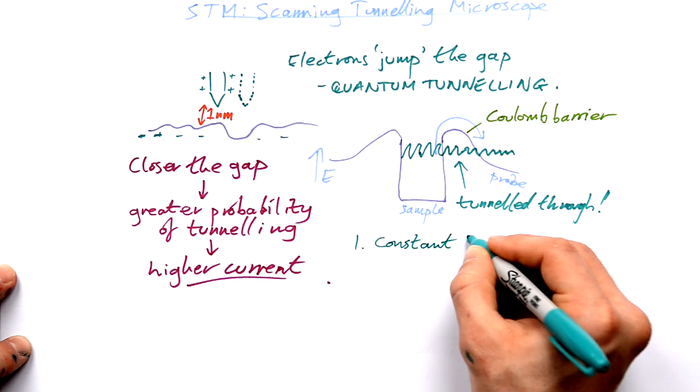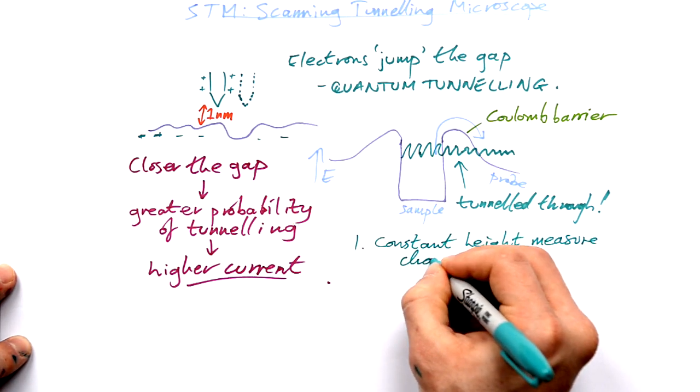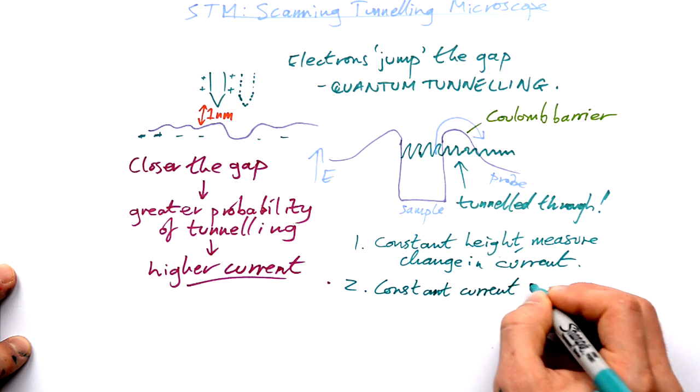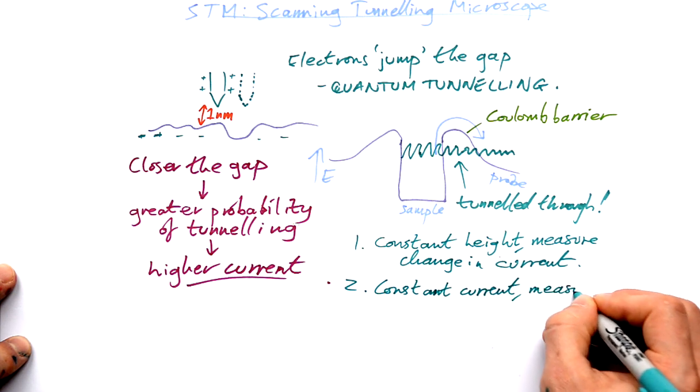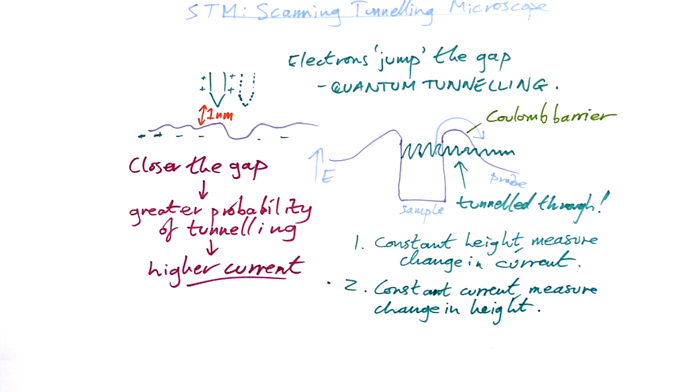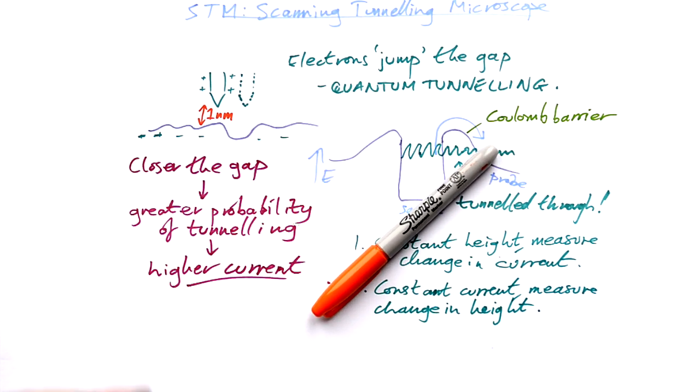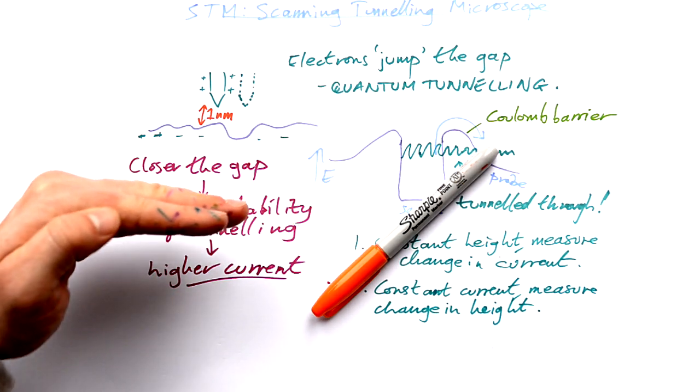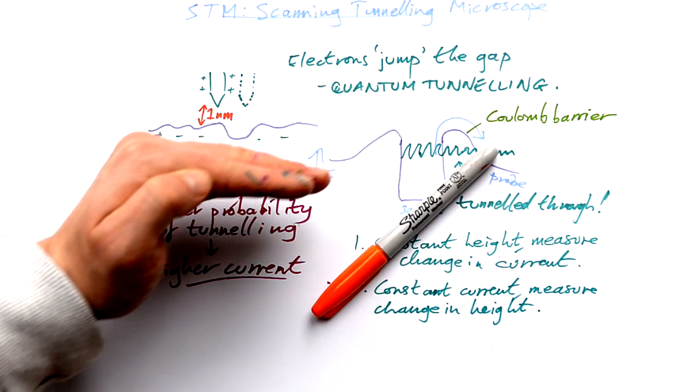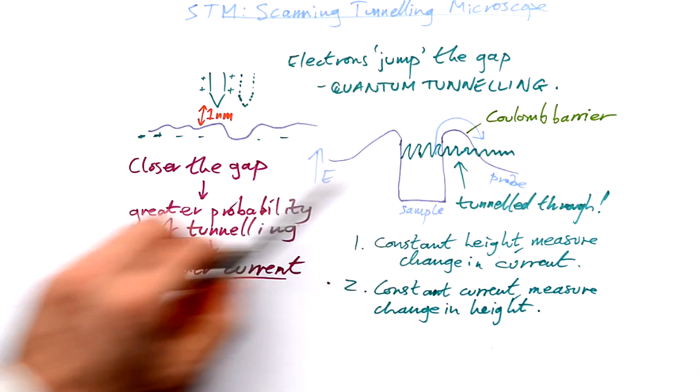That's one way of doing it. We can have it at a constant height, measure the change in current. The second way of doing it is to have a constant current. And you measure the change in height that you need to achieve that. So it's almost like when you're at the auto car wash and you have your windscreen here and the dryer comes along and it detects that it needs to move up. So it tries to keep at a constant height above your windshield.